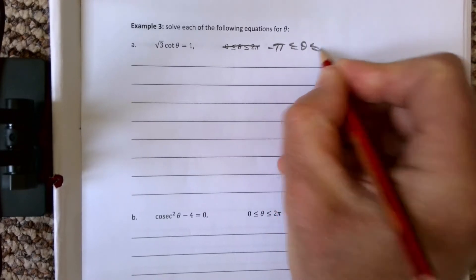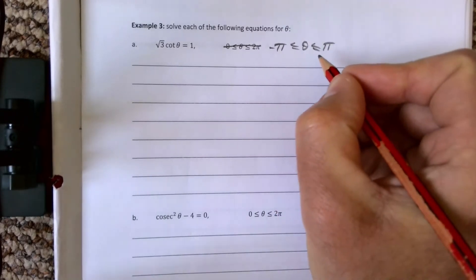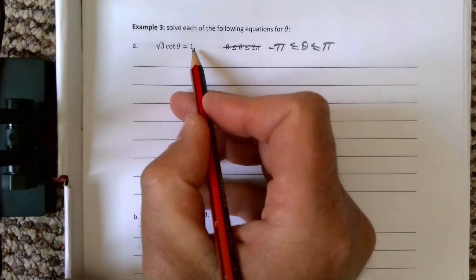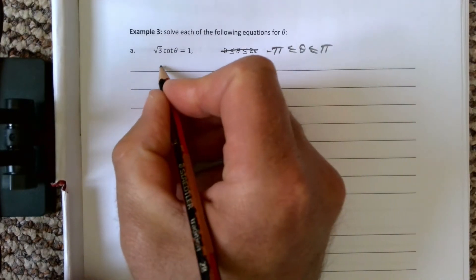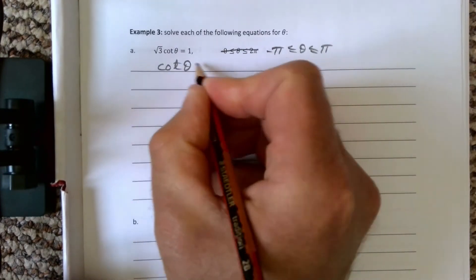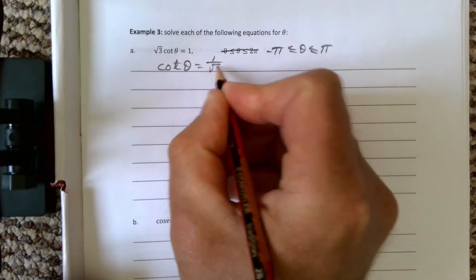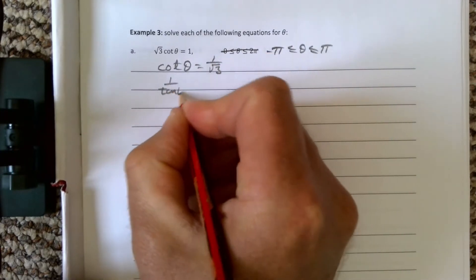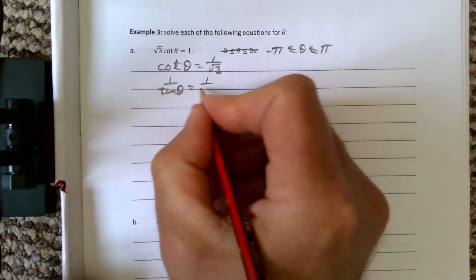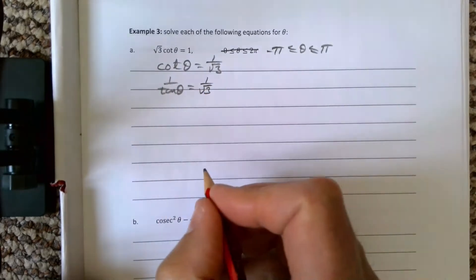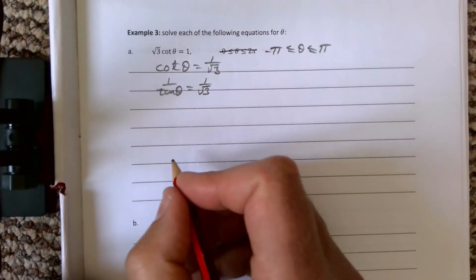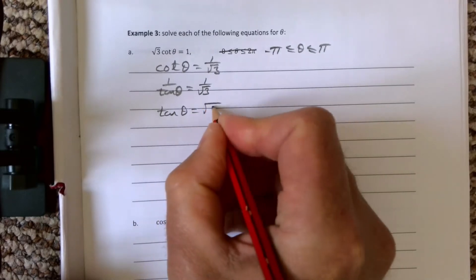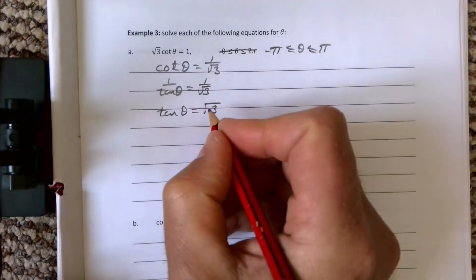We have √3 cot θ equals 1, and we need cot θ on its own, so cot θ is 1 over √3. That means we know that 1 over tan θ is 1 over √3. Rearranging that, we're then going to get tan θ equals √3.